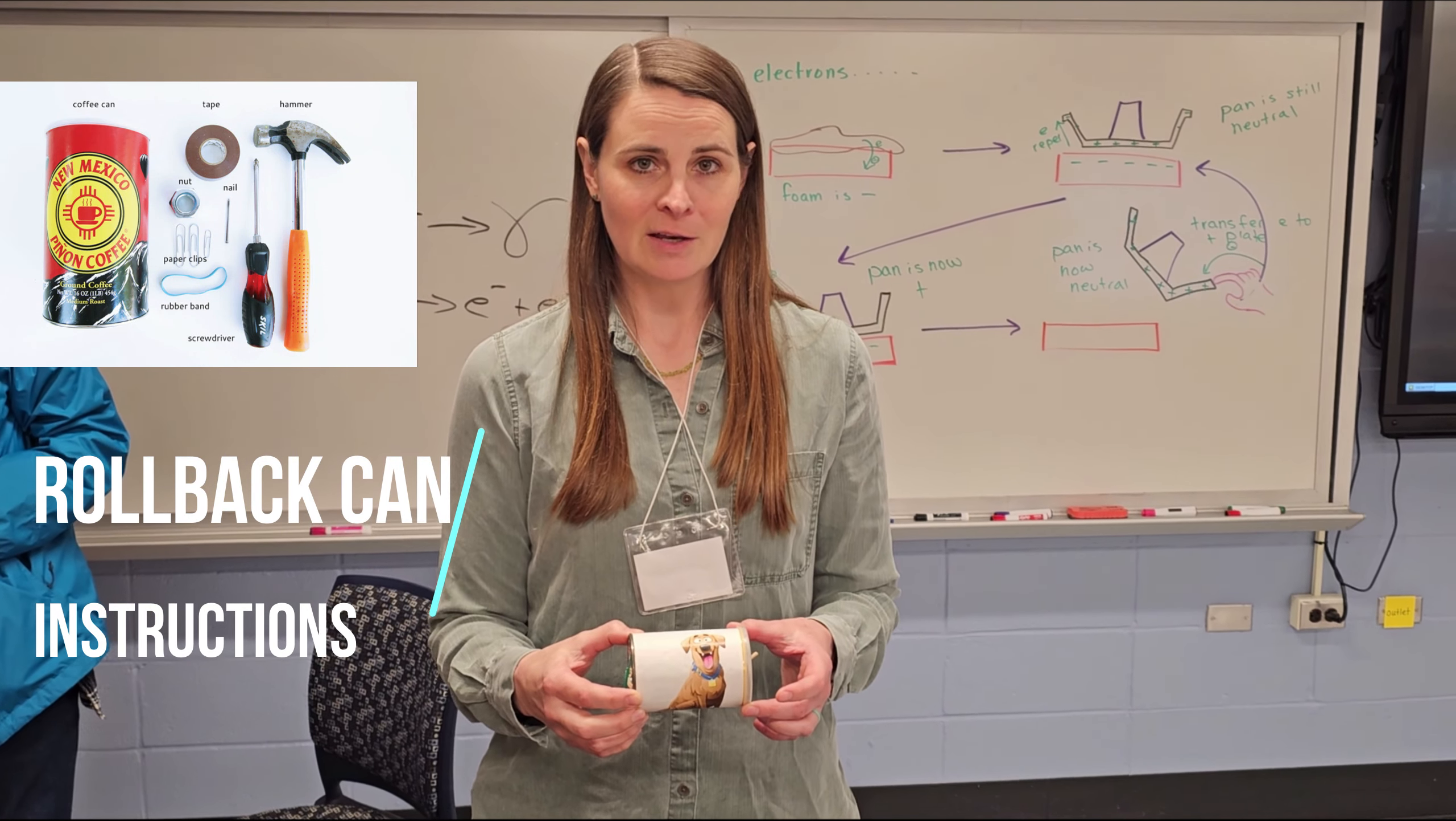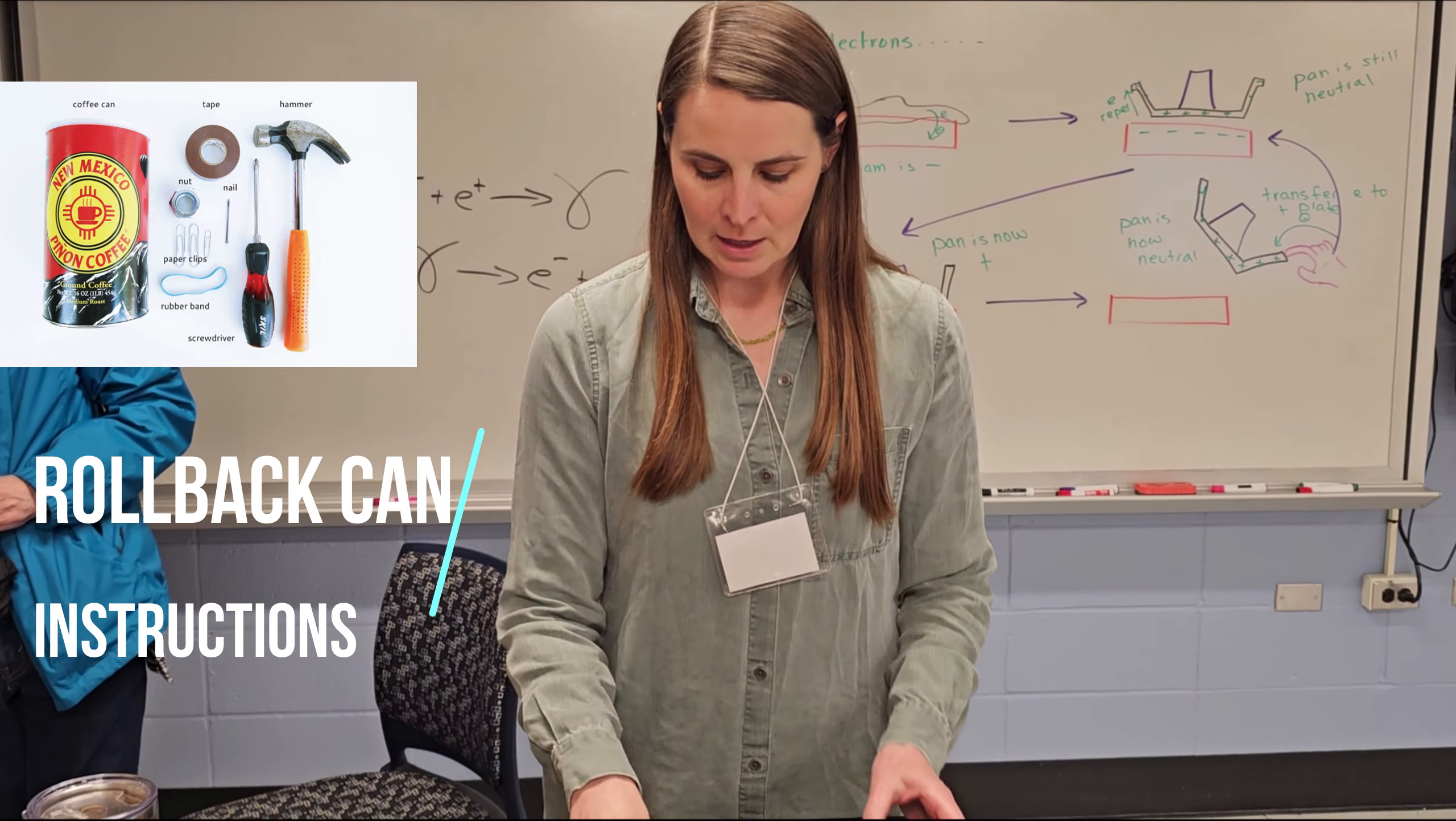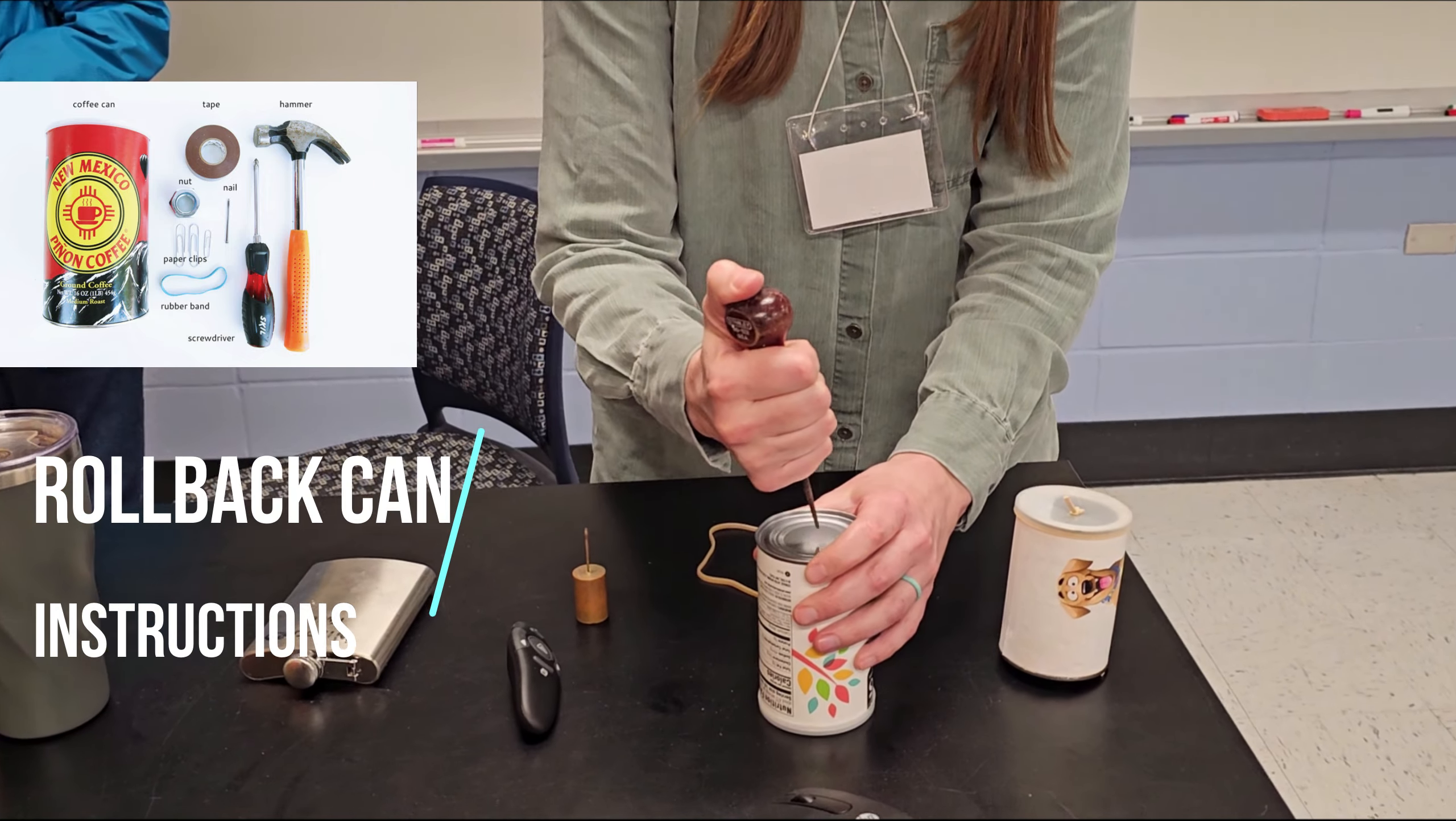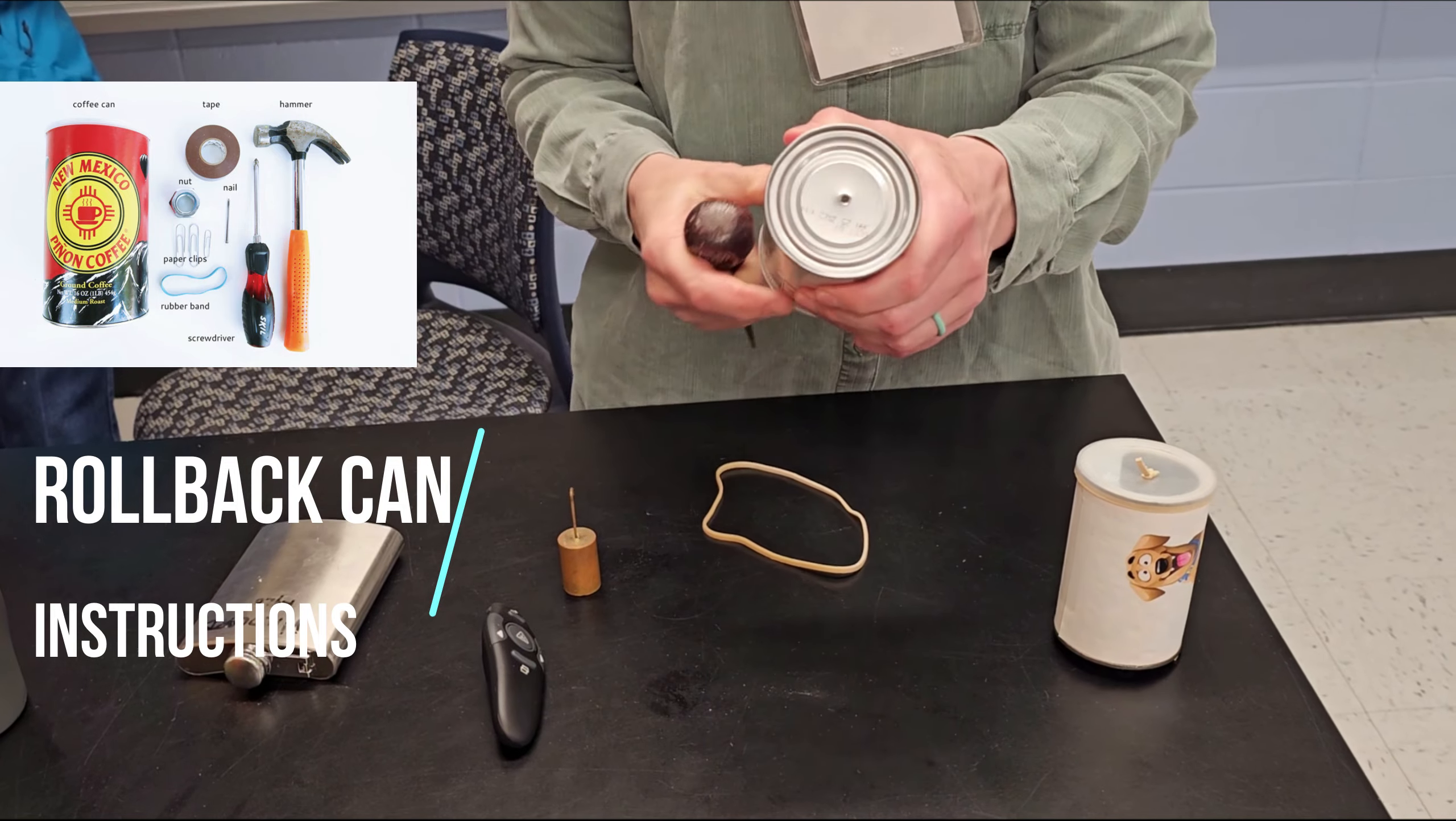So this is how you make the rollback can. You simply take a baking soda can and using an awl, you make a hole, a little hole on the top of the plastic lid. I might need a hammer for this one, but you make a hole on the bottom.